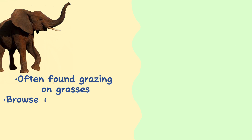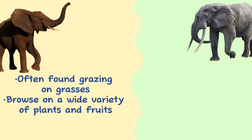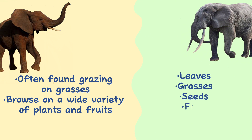Diet. Due to their habitat, savannah elephants are often found grazing on grasses, but they also browse on a wide variety of plants and fruits. African forest elephants eat leaves, grasses, seeds, fruit, and tree bark.